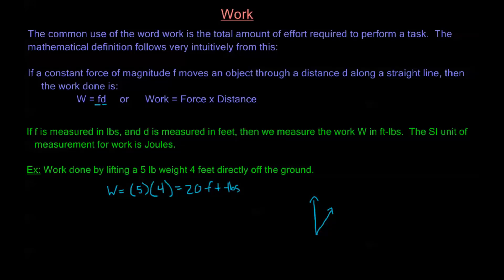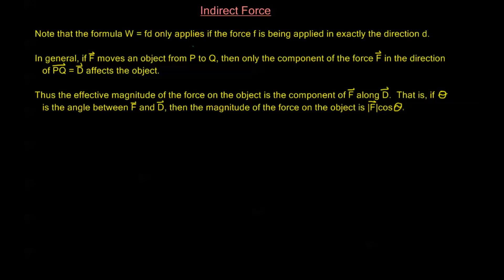To handle this, we're going to use the dot product. The formula W = FD only applies if the force F is being applied in exactly the direction D. In general, if we model force with a vector — giving us both magnitude and direction — and this force F moves an object from P to Q, then only the component of F in the direction of PQ affects the object. Let me draw a picture to illustrate this.